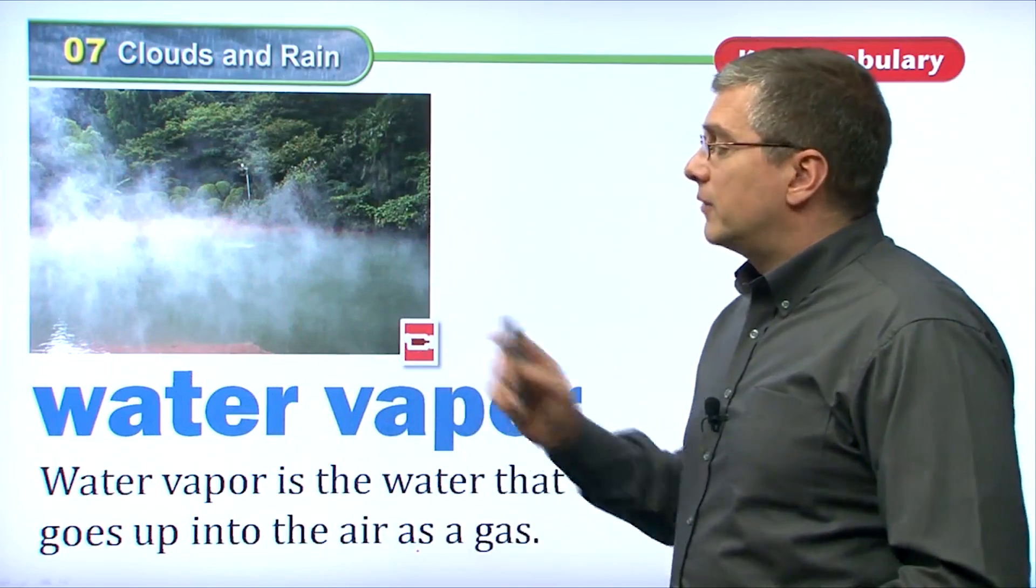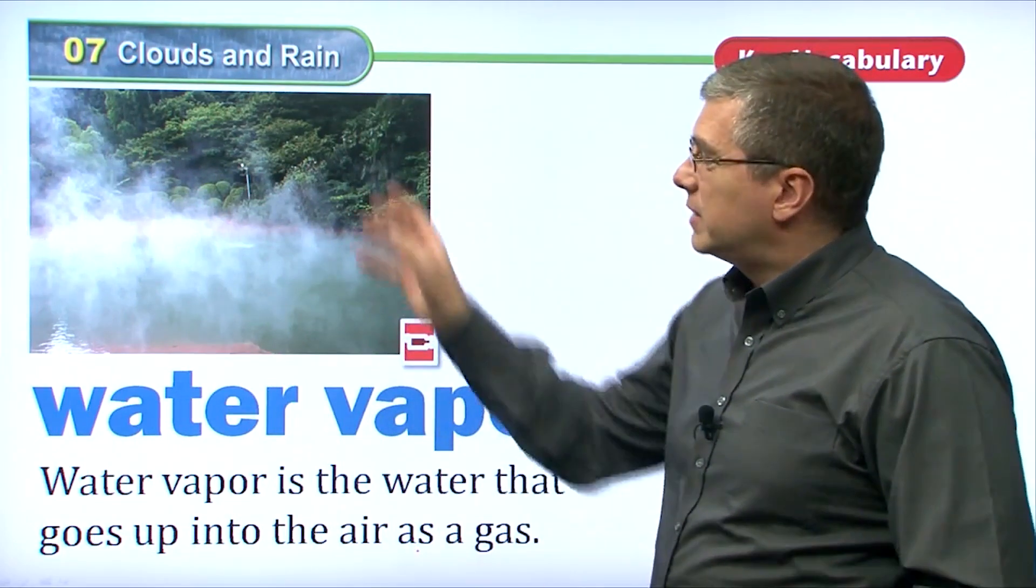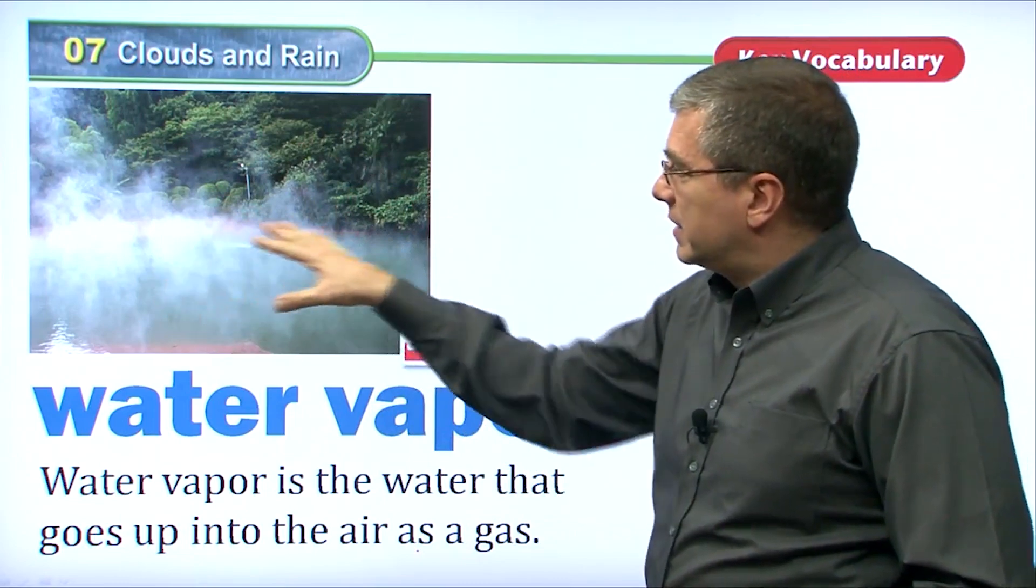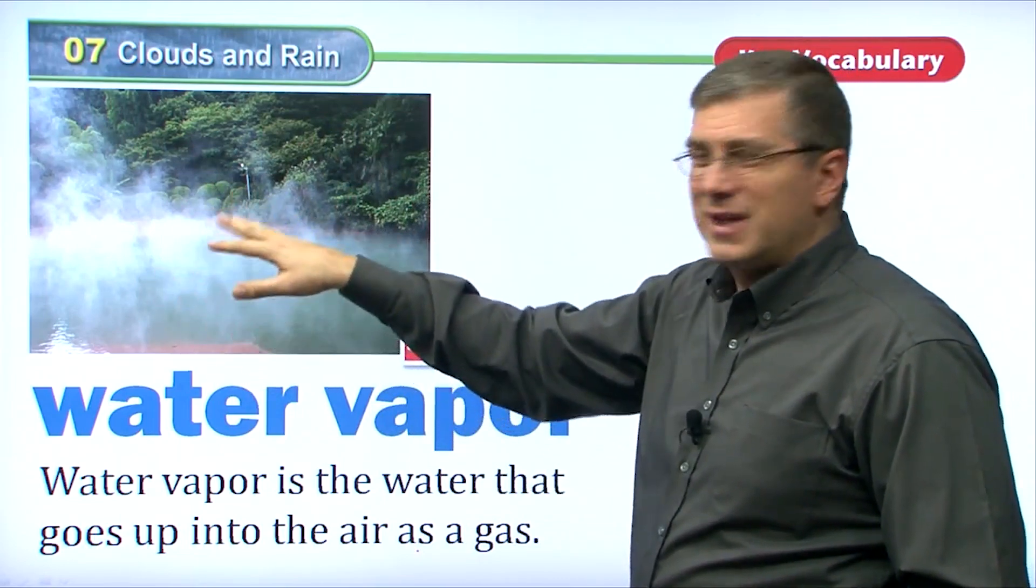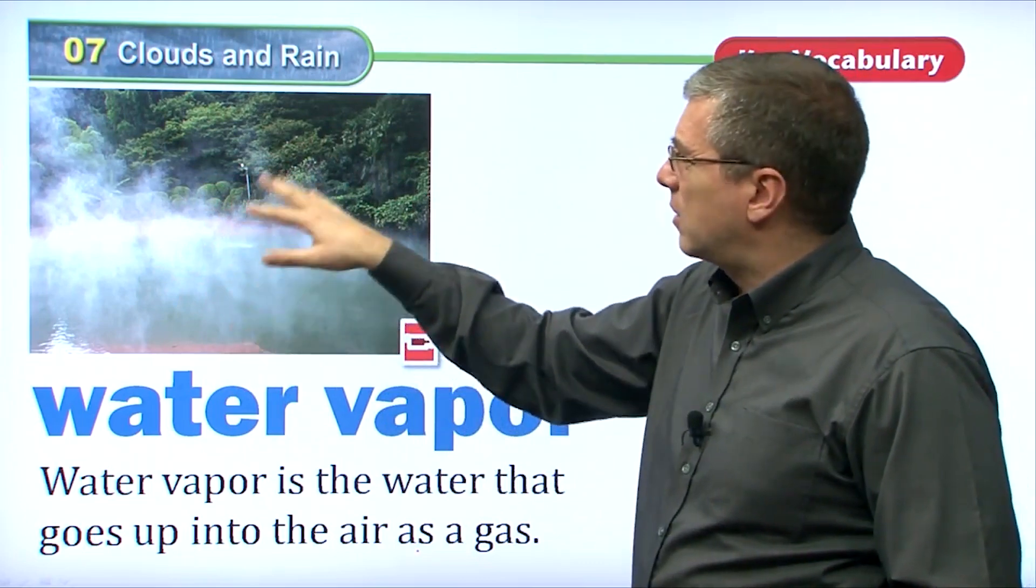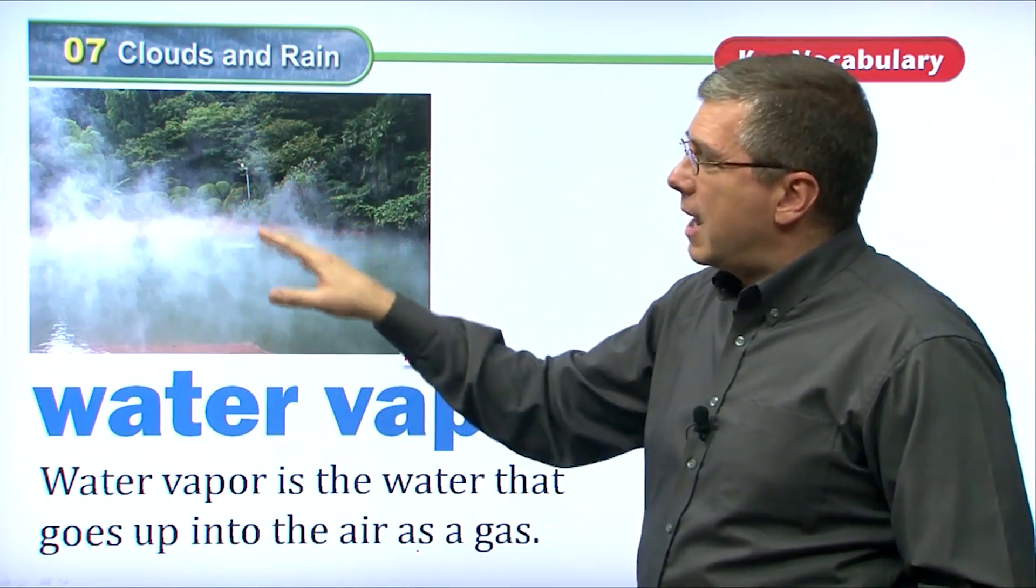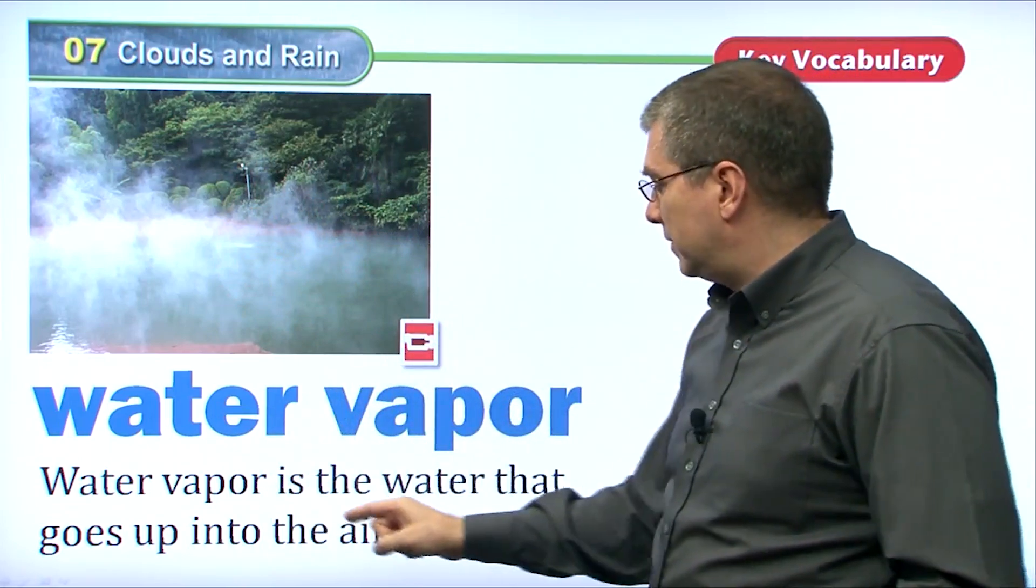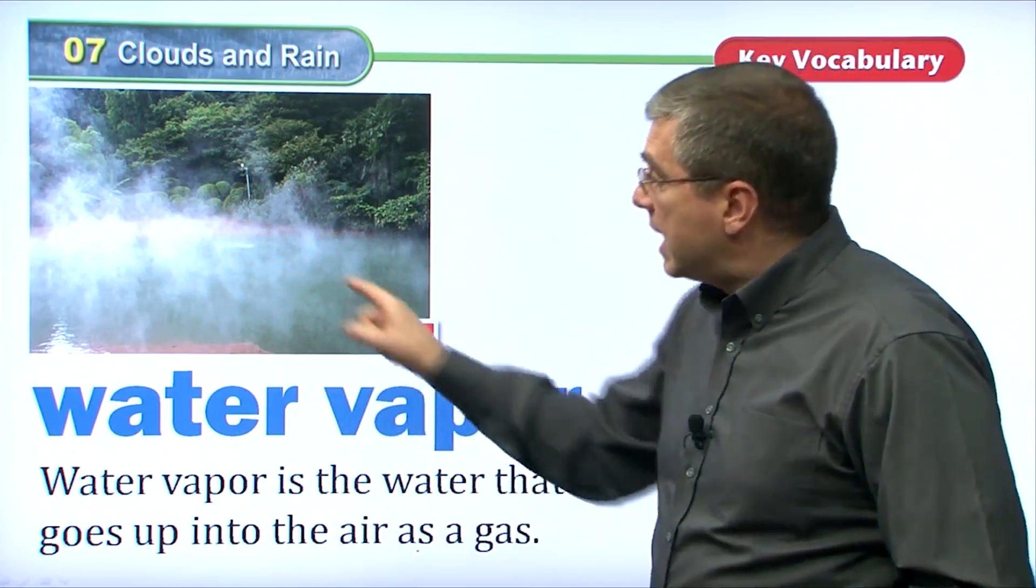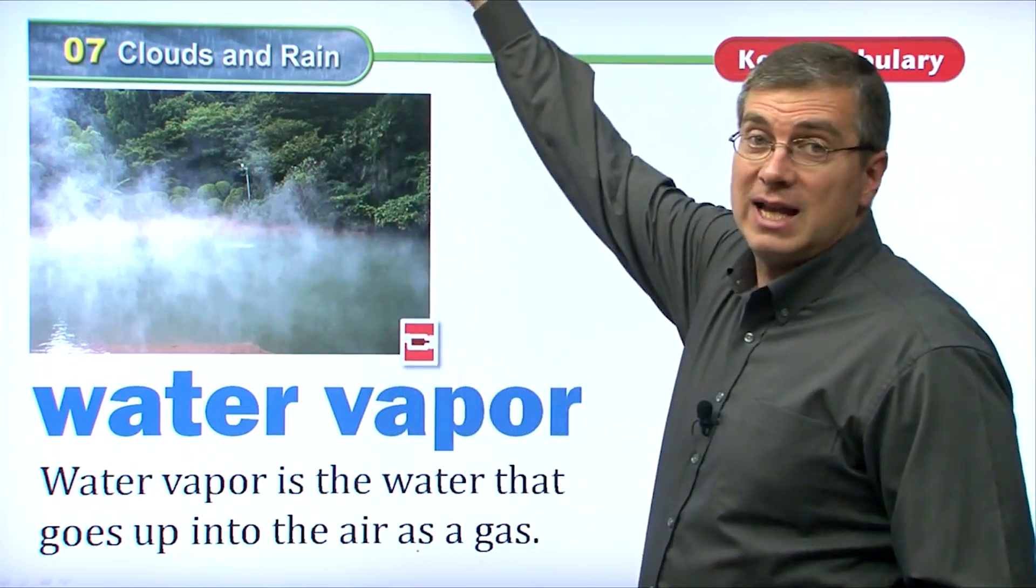Now, we've talked about water vapor a little bit already. If you take a look at this picture, we can see a lake, a body of water here. We can also see it looks like a small cloud, a strange cloud above the water. Well, clouds are basically water vapor. Water vapor is the water that goes up into the air as a gas. Here it's liquid. In the sky, it's cloud.